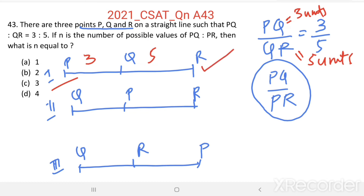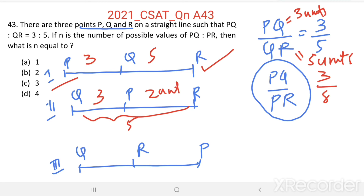From the arrangements considered — PQ equal to 3 and QR equal to 5 — we evaluate PQ divided by PR for each case. The third arrangement, where PQ equals 3 and QR equals 5 in a linear arrangement, is not possible since PQ is less than QR. Therefore, we can eliminate this arrangement.